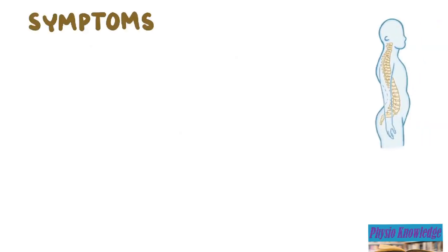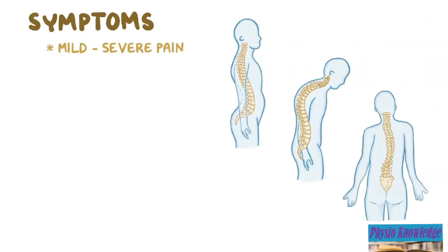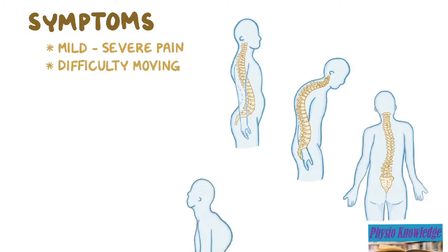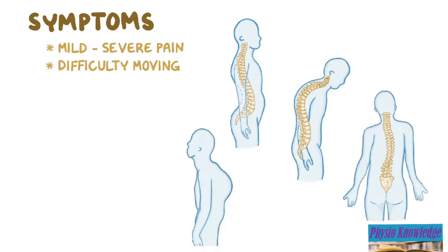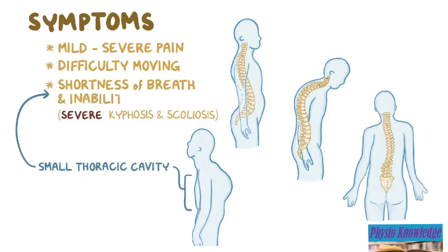In terms of symptoms, spine deformities can cause mild to severe pain, and the stiffened spine can make it difficult to move. In severe kyphosis and scoliosis, the small thoracic cavity can lead to shortness of breath, and an inability to exercise.